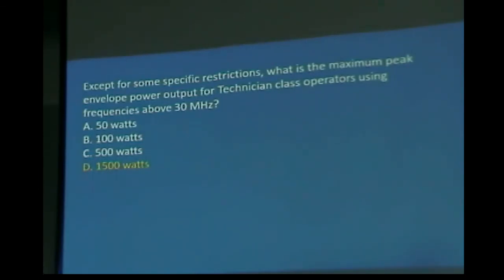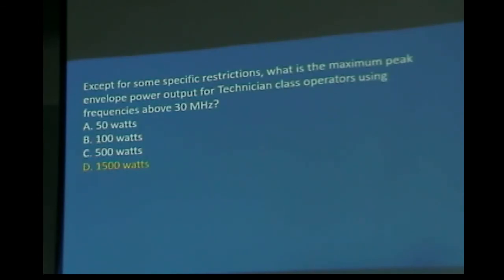What did John spend for that new 1,500-watt amplifier he just bought? About $3,300–$3,400. The reason John does this is he bounces signals off the moon — EME, Earth-Moon-Earth communication — which requires that kind of power.